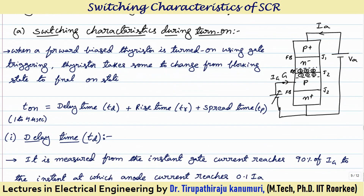Let us first start with the switching characteristics during turn-on time, and after that we will go for switching characteristics during turn-off time. Let us take for example, the gate pulse is not applied and we have only applied the forward voltage. When you apply the forward voltage, the positive is connected to this P and the negative is connected to this N.